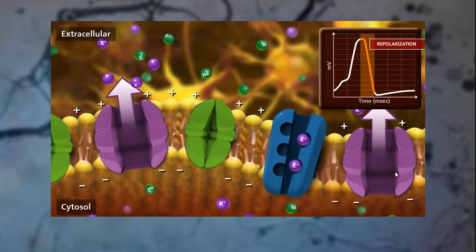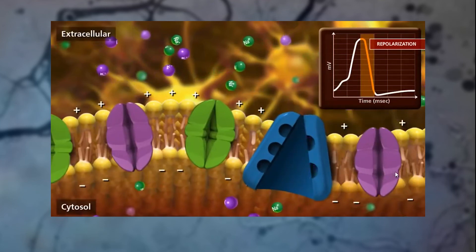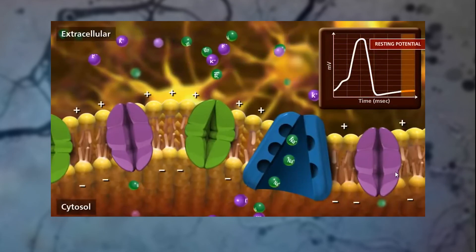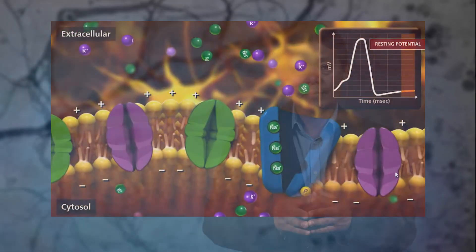After firing, a neuron's potential will often overshoot, descending below the resting potential. This leads to a refractory period during which the neuron is so hyperpolarized that it cannot fire.